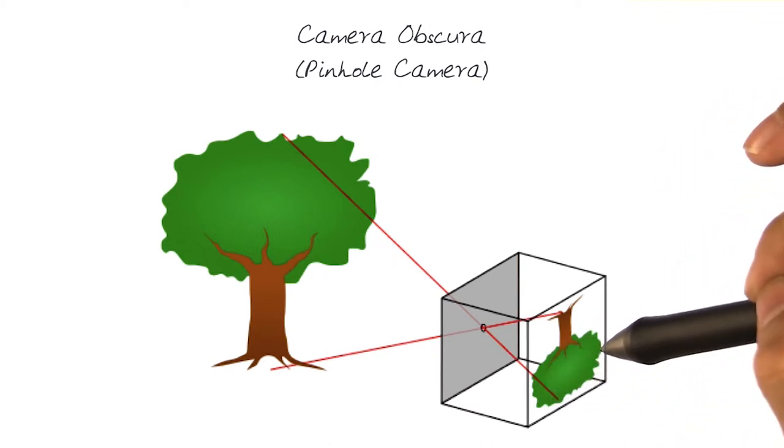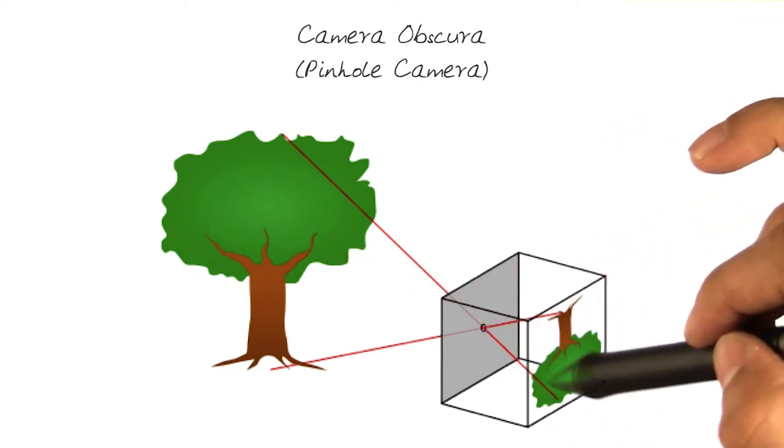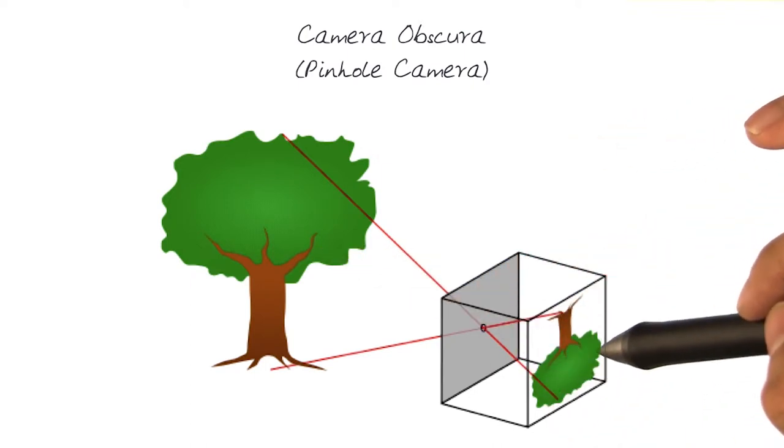And now, of course, the simplest thing we can do to make this into a camera that would preserve this image would be to store this image in some form or another.